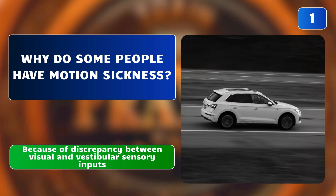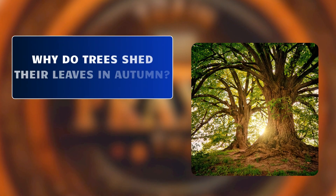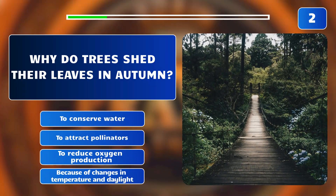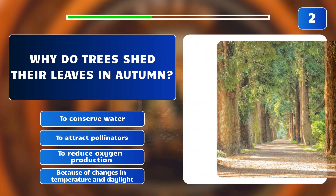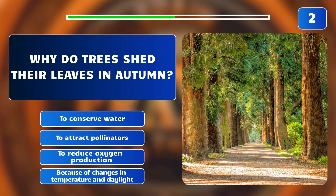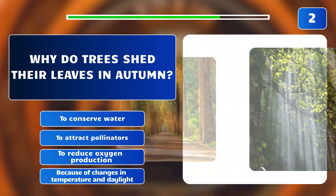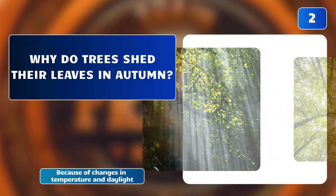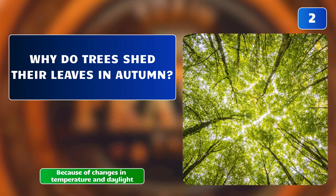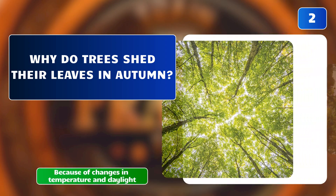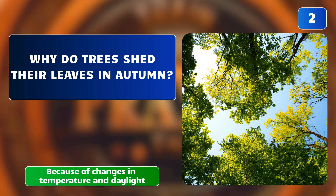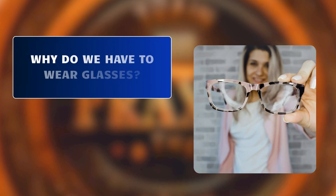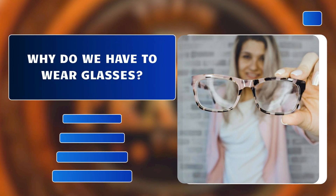Why do trees shed their leaves in autumn? To conserve water? To attract pollinators? To reduce oxygen production? Or because of changes in temperature and daylight? The correct answer is: because of changes in temperature and daylight. It's a natural response to changes in temperature and daylight, preparing for winter.